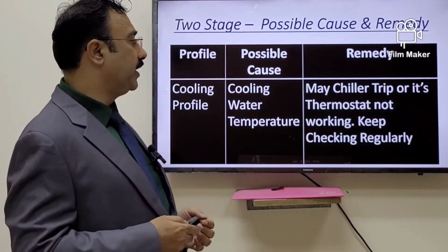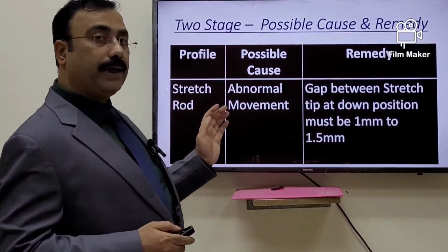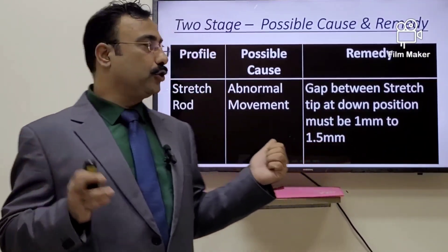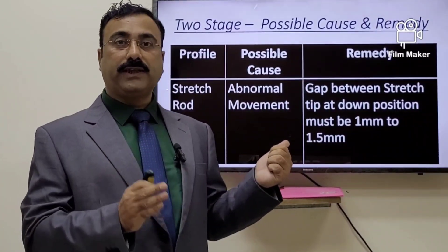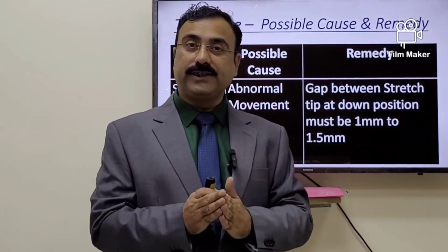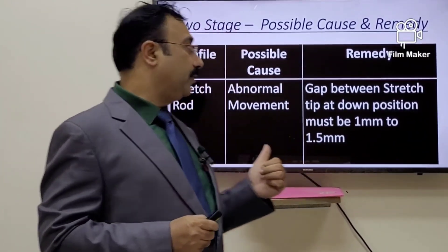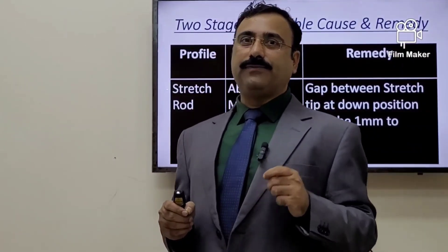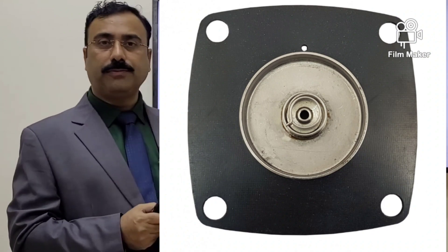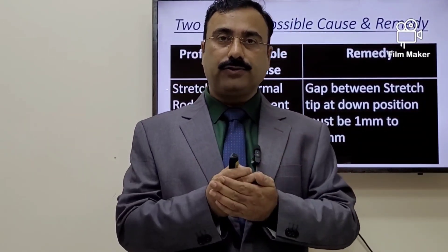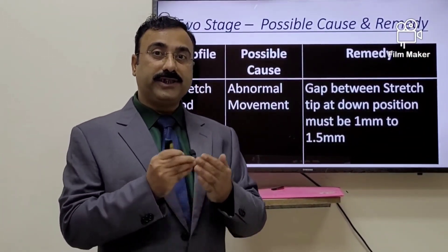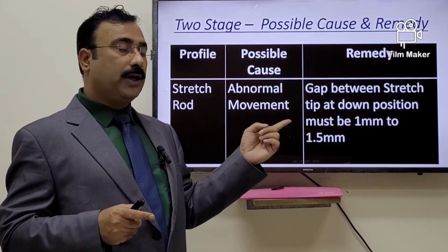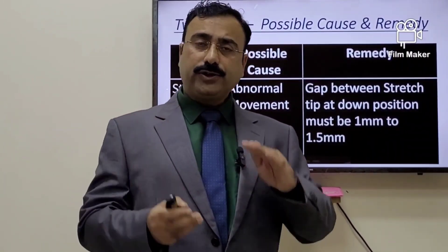Stretch rod abnormal movement occurs when it operates on a pneumatic valve. Newer machines use servo motors, but if your machine still uses a pneumatic valve, the seal and diaphragm may malfunction. Wrong quality seals or diaphragms can get stuck on one side, or the diaphragm may be damaged, causing air leakage. In either case, the stretch rod function becomes abnormal, and you must inspect and correct it.